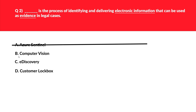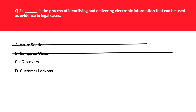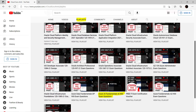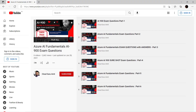Let's look at option B, that is Computer Vision. Computer Vision is again an AI service that analyzes content in images and videos. The question is related to identifying electronic information, not images or videos, hence this seems to be incorrect. If you want to learn more about artificial intelligence, I have a separate course AI-900 available for free.